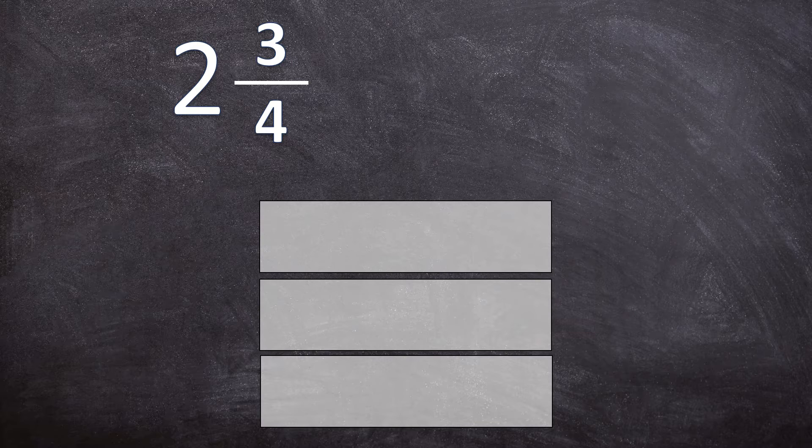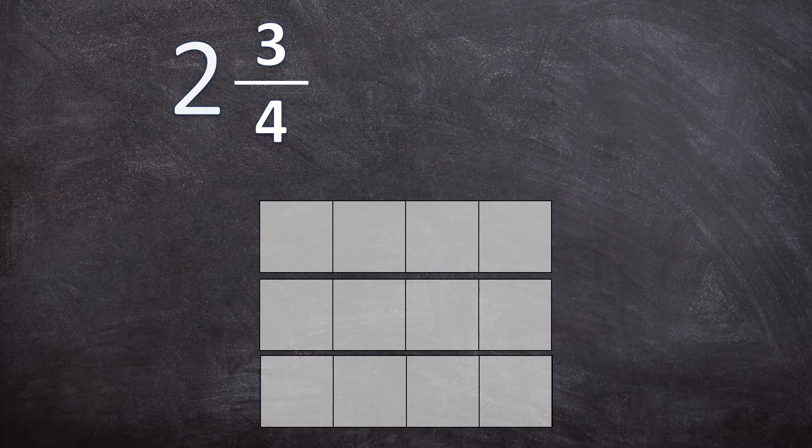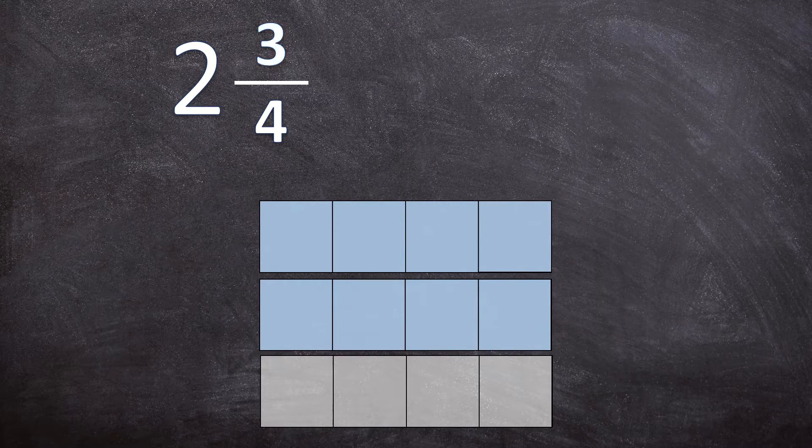Let's use these three shapes to represent this mixed number. As the denominator shows, each of these shapes will be divided into four equal parts. This mixed number has two holes, so we're going to color in two whole shapes and three fourths of the next shape.